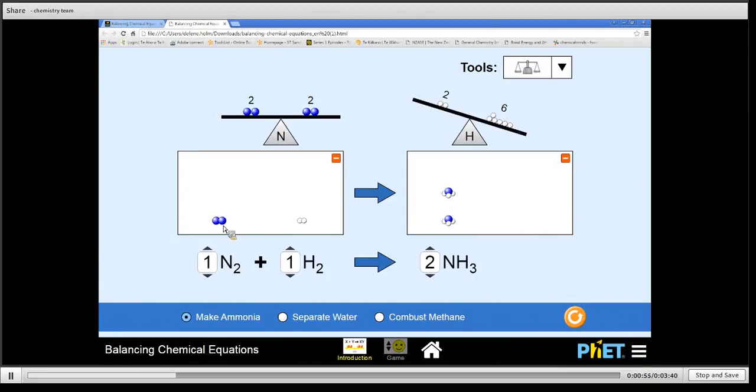So my nitrogens are balanced. I have however not got balanced for hydrogen because I've got six over here but only two over there. So what I need to do is I need to just keep on adding hydrogen until I have got six atoms of hydrogen on both sides.